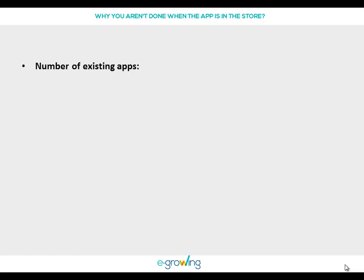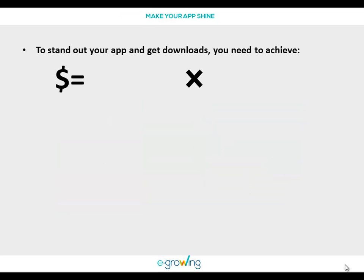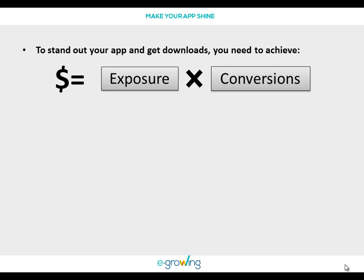What do you do when the app is in the store? There are more than 2 million apps in the stores and you don't want to be lost. Can you really do something to stand out and make money with your apps? The answer is yes. All you need to achieve is exposure and conversions — two concepts that will help you get downloads and earnings from your app in the store.